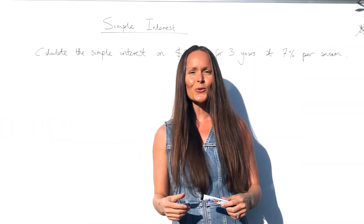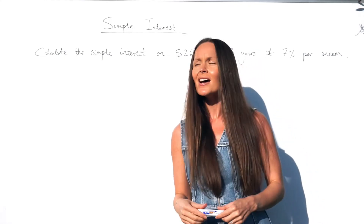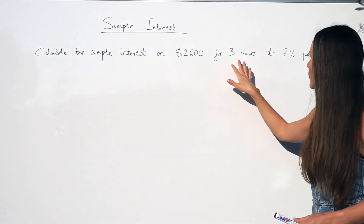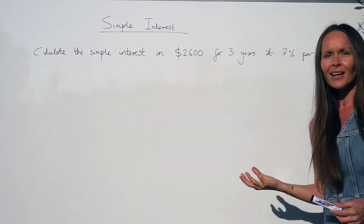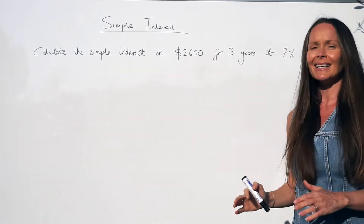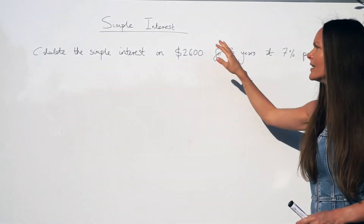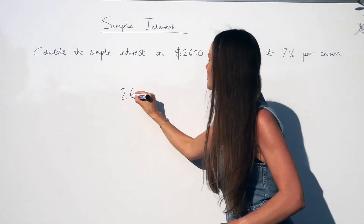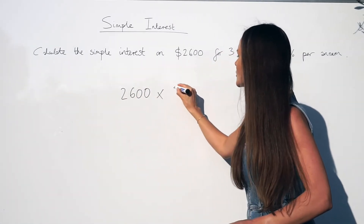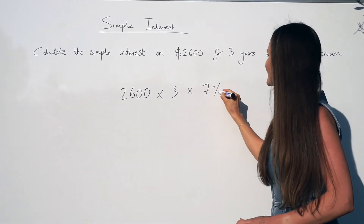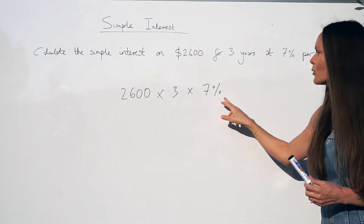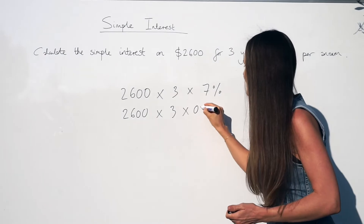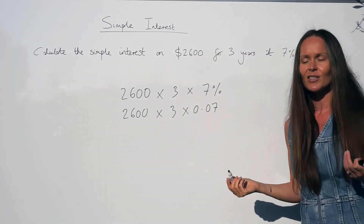In this lesson I'm going to show you some simple interest questions. The first one says: calculate the simple interest on two thousand six hundred dollars for three years at seven percent per annum. Per annum just means each year. All you need to do is multiply the money by the number of years and then by the percentage. In your calculator you would type 2600 times 3 times 7%, or alternatively you could change that percentage into a decimal.